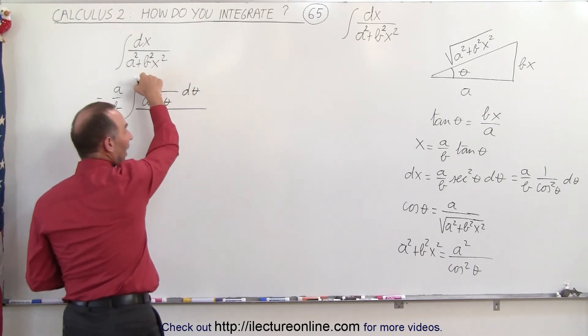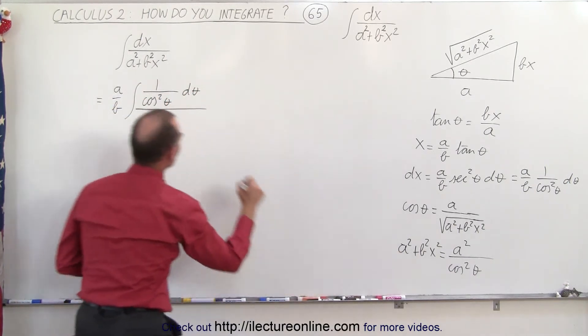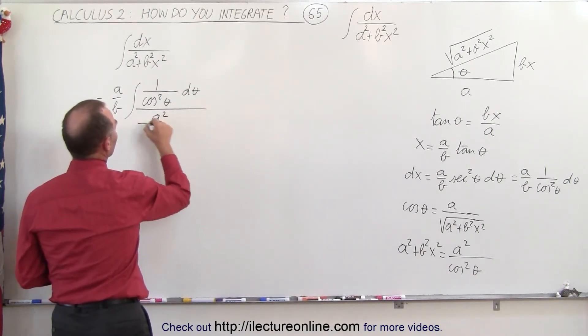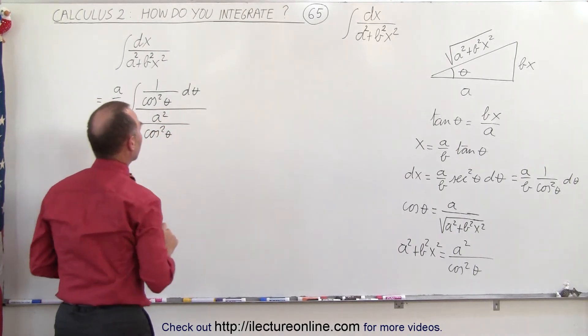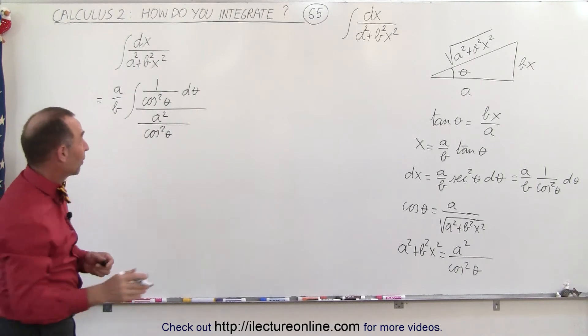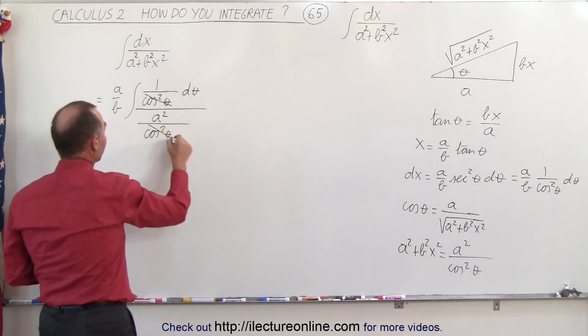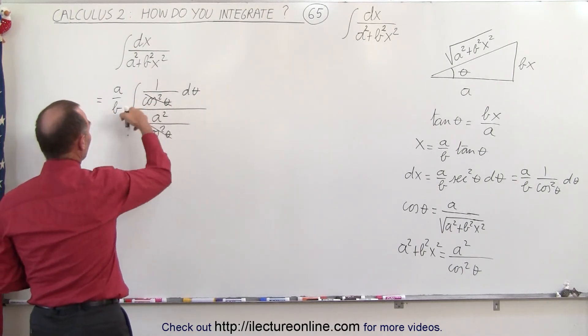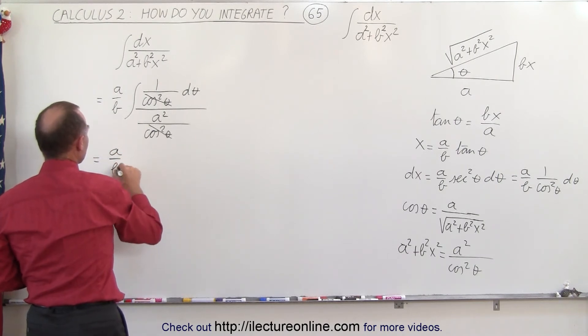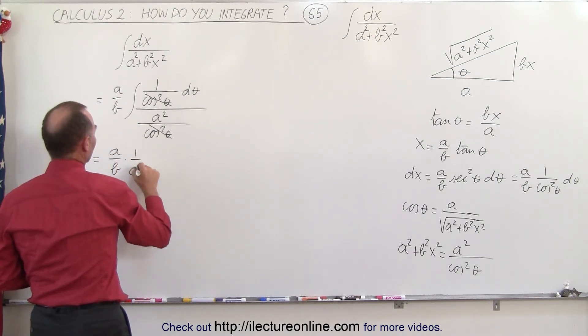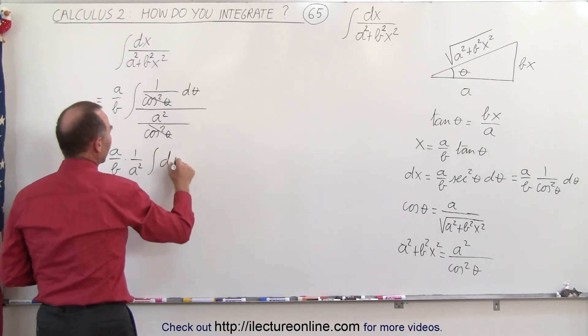divided by the denominator, which we can substitute A-square divided by cosine square of theta. And then you can see that the cosine square of theta can be cancelled out. So the 1 over A-square can come outside. So this is A over B times 1 over A-square times the integral of d theta.